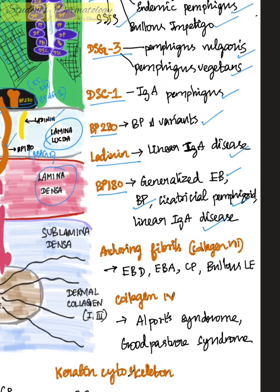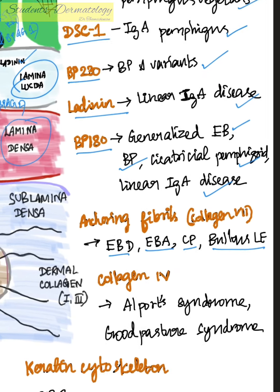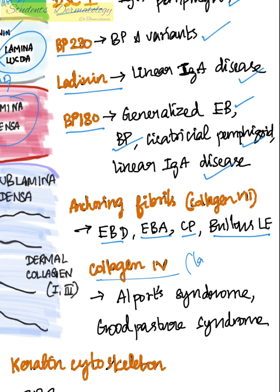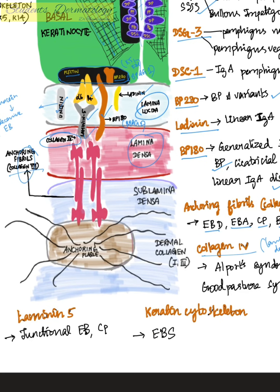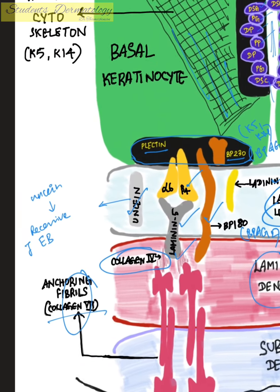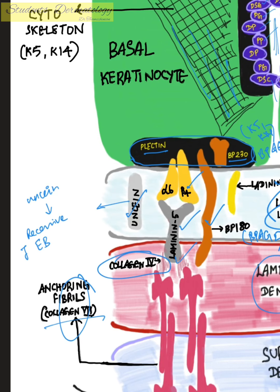The anchoring fibrils contain collagen type 7 in the lamina fibro-reticularis; auto-antibodies against this protein can cause epidermolysis bullosa dystrophica acquisita, cicatricial pemphigoid, and bullous lupus erythematosus. Auto-antibodies against collagen type 4, present in the lamina densa, can lead to Alport syndrome and Goodpasture syndrome. Against the keratin cytoskeleton it can lead to epidermolysis bullosa simplex, and laminin 5 mutation can lead to junctional epidermolysis bullosa and cicatricial pemphigoid.